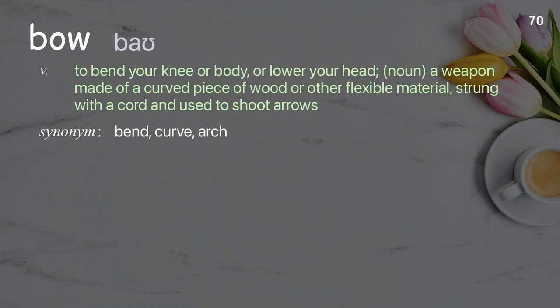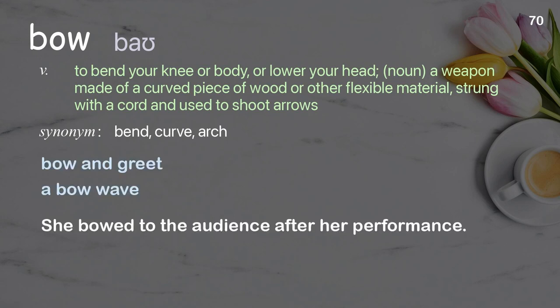Bow: to bend your knee, or body, or lower your head; also a weapon made of a curved piece of wood or other flexible material, strung with a cord and used to shoot arrows. Examples: bow and greet, a bow wave. She bowed to the audience after her performance.